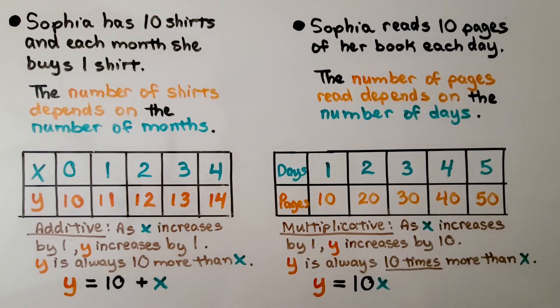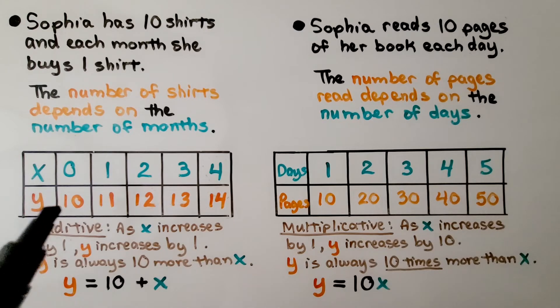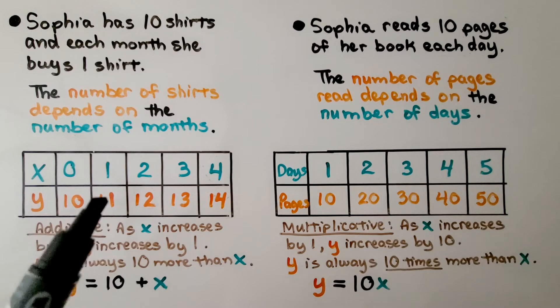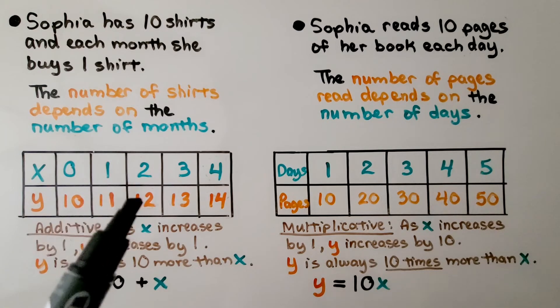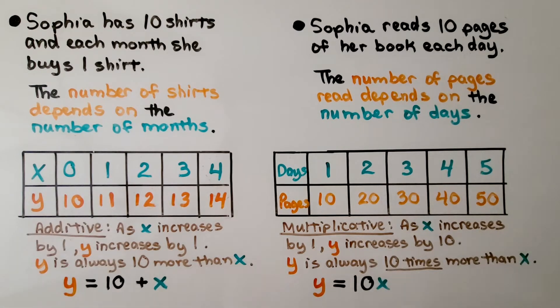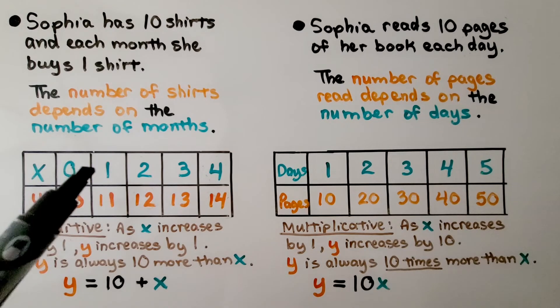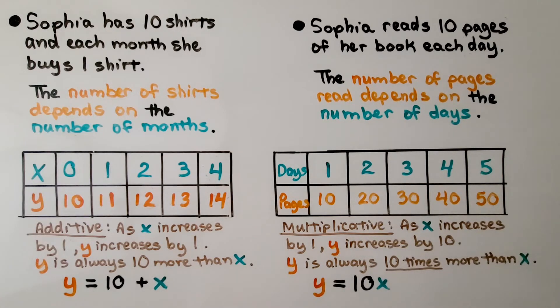Sophia has 10 shirts and each month she buys one shirt. The number of shirts depends on the number of months. She started with 10 shirts, then a month went by and she bought one, so now she has 11. Another month went by and now she has 12. This is additive. As X increases by 1, Y increases by 1. Y is always 10 more than X. Our equation is Y = 10 + X.